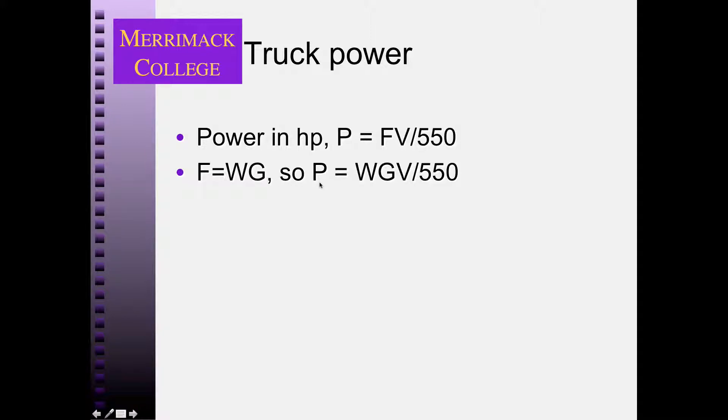So the power required to maintain that velocity on a grade for any given weight of truck is equal to this. So if I solve for V, which is the speed that can be maintained on a given grade, it's equal to this. Now, if I plug in the weight to power ratio, in our case, on that curve, it was 300, 300 pounds per horsepower.